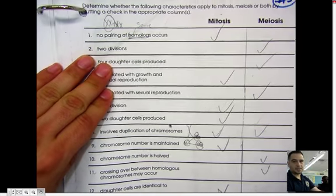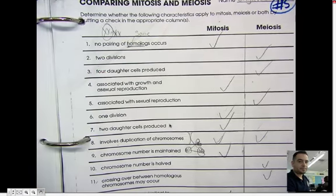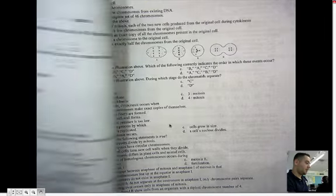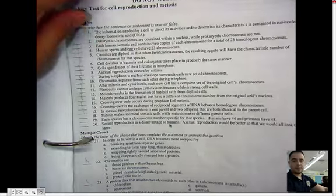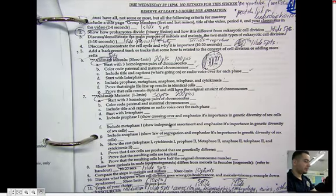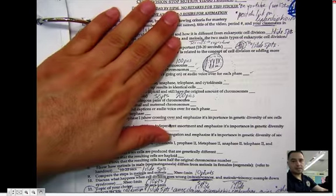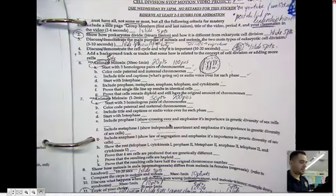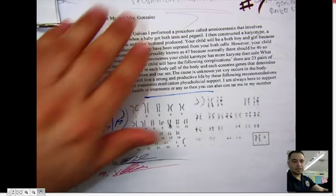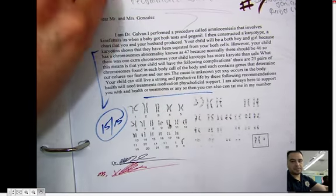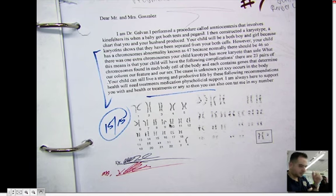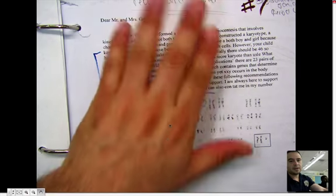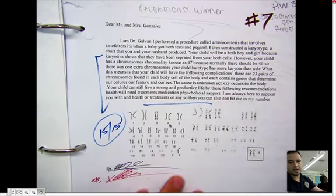Worksheet five is comparing mitosis and meiosis. And there was also a practice test that you could use to review. Worksheet six, the cell division stop motion video project instructions. Worksheet seven is just really your karyotype letter. You should get it returned. If I saved it and I used it to put it on the board as an exemplar, then don't worry about it. In here, just make a note that I'm using it on the board as a model.